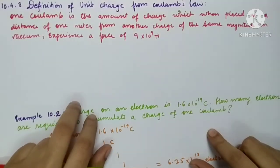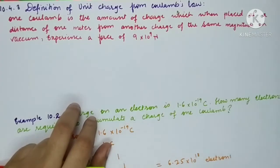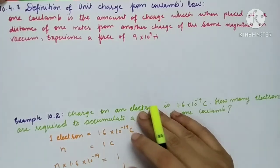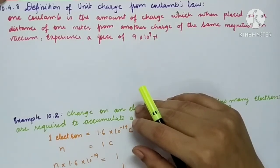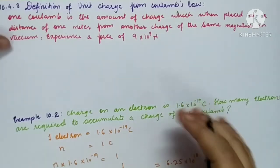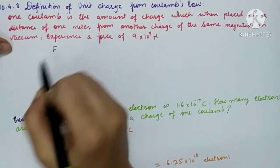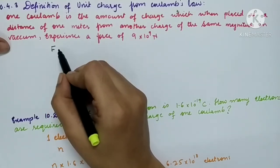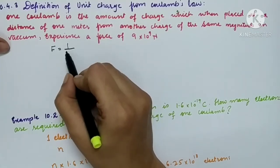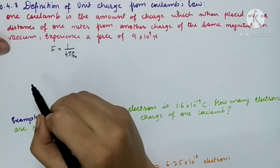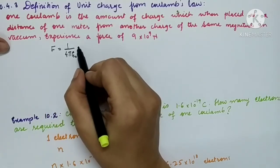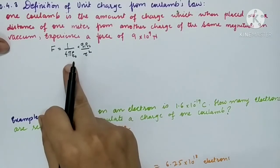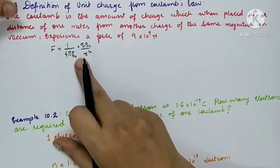Assalamu alaikum dear students. Let's continue the topic of electrostatics. In the last lecture, we studied Coulomb's law of attraction or repulsion between two charges placed at a fixed distance. That force is found to be directly proportional to the product of the magnitude of the charges and inversely proportional to the square of the distance between them, given by the equation F = (1/4πε₀)(q₁q₂/r²).